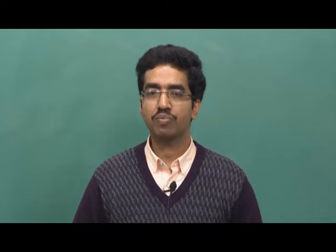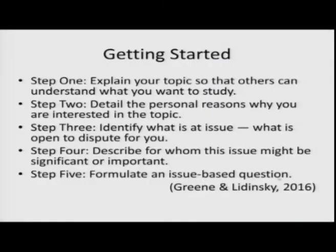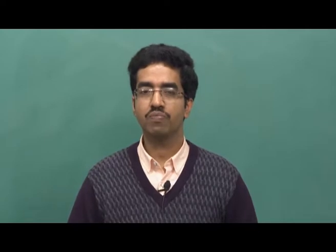If conclusions have been reached, there is no point in doing research there — you have research venues when there is a gap. Step 4: describe for whom this issue might be significant or important. Recall, you have to talk about implications of your project, and you need to think who is going to benefit from this — whether it is a specific group of industries like banking sector, or the general public. Then step 5: formulate an issue-based question — clearly formulate your research question, for example, how is this teaching method effective regarding schools located in rural areas.